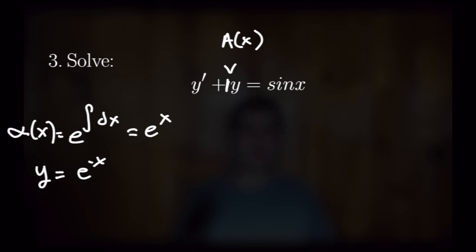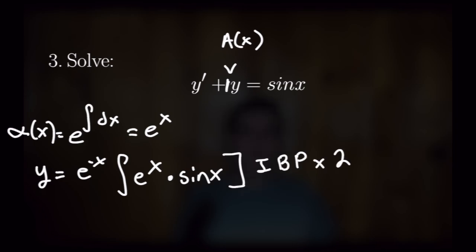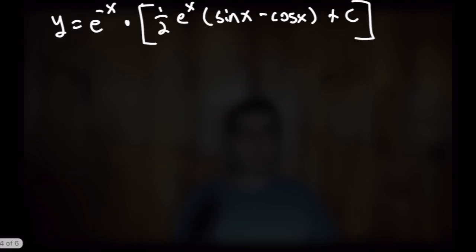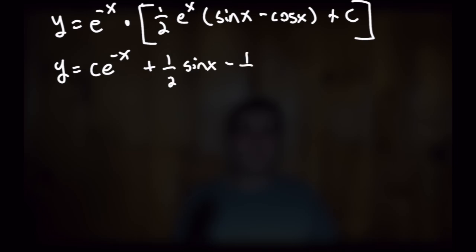We have y equal to 1 over e to the x, written as e to the negative x, times the integral of the integrating factor times b of x — where b of x is sine of x. So the integral is of e to the x times sine of x dx. This integral requires integration by parts two times to evaluate. Once you do, you get y equal to e to the negative x times one half e to the x times sine of x minus cosine of x, plus constant c. The e to the negative x and e to the x cancel, and c picks up a factor of e to the negative x. Our final general solution is y equal to c times e to the negative x plus one half sine of x minus one half cosine of x.